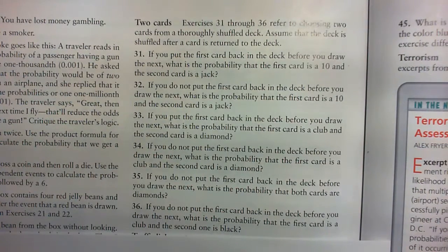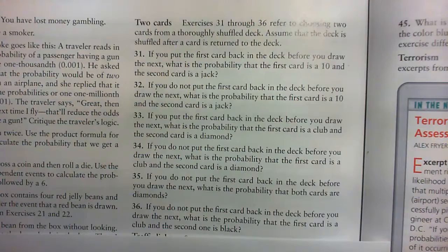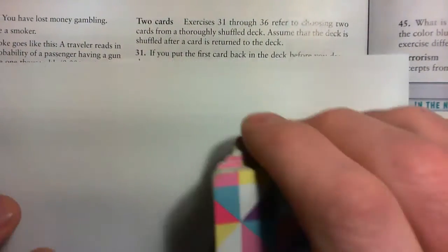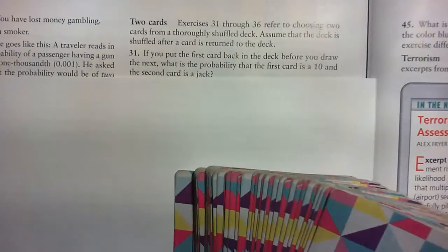The first question is, if you put the first card back in the deck before you draw the next, what is the probability that the first card is a 10 and the second card is a jack? So we're going to assume no jokers, so a deck of 52 cards. It would be nice if they said that, but they didn't.